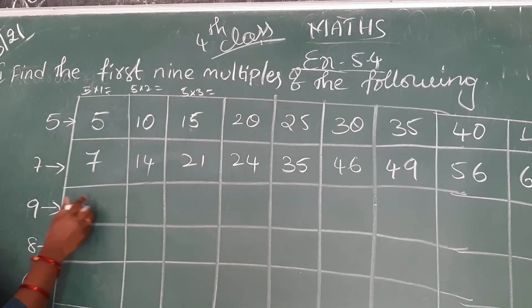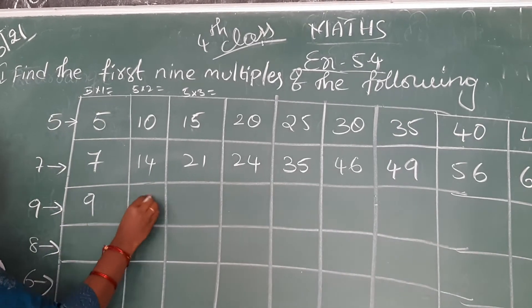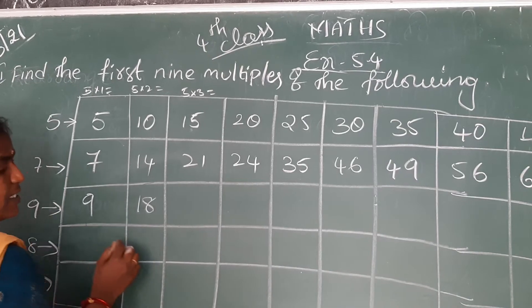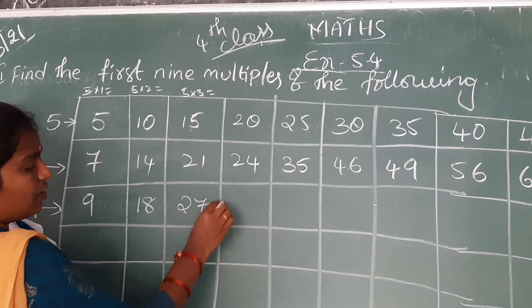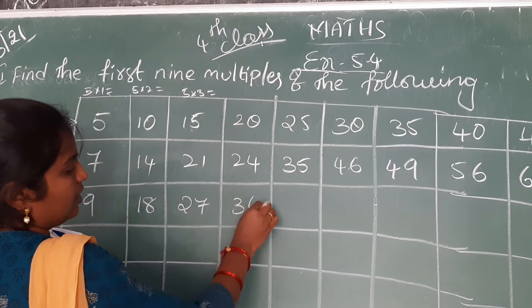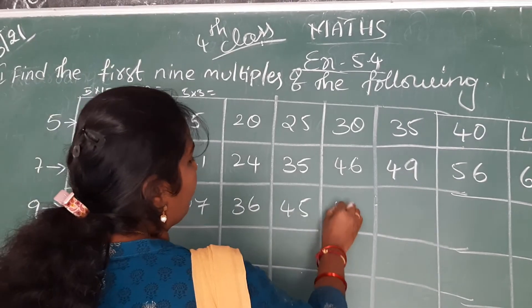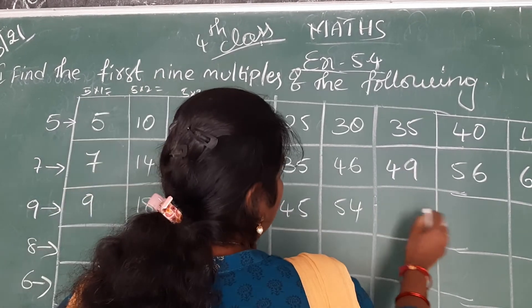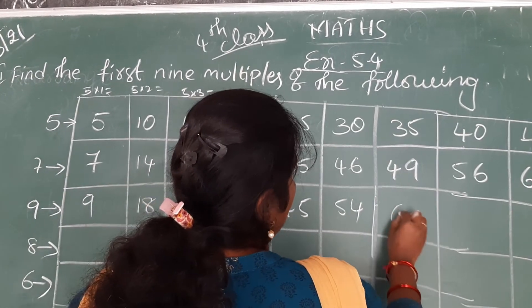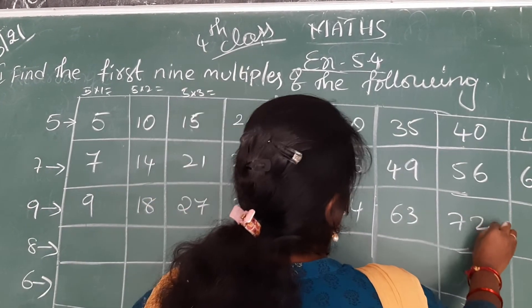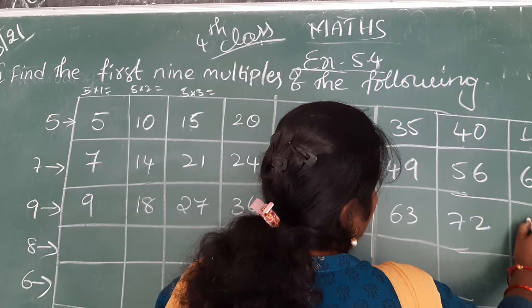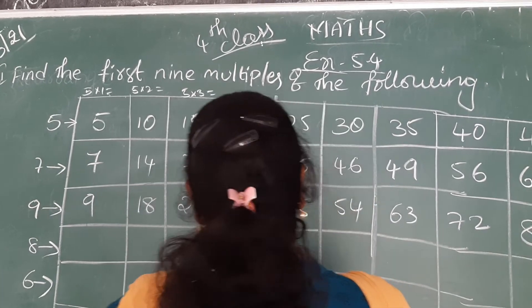Next 9 table. 9 ones are 9. 9 twos are 18. 9 threes are 27. 9 fours are 36. 9 fives are 45. 9 sixes are 54. 9 sevens are 63. 9 eights are 72. 9 nines are 81. Like this.